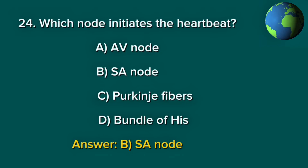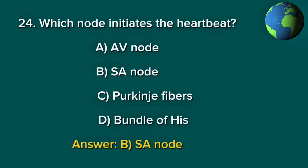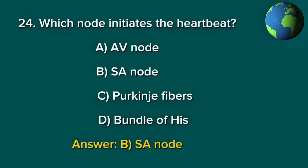Question 24. Which node initiates the heartbeat? A. AV node. B. SA node. C. Purkinje fibers. D. Bundle of His. Answer: B. SA node.